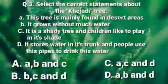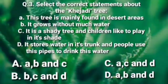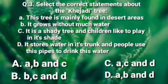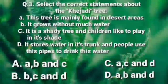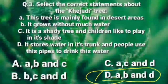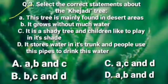Option B states it grows without much water. The KZD tree stores water. It is a shady tree and children like to play in its shade. Options A, B, and D relate to the desert area — option A is correct that it is found in desert areas.